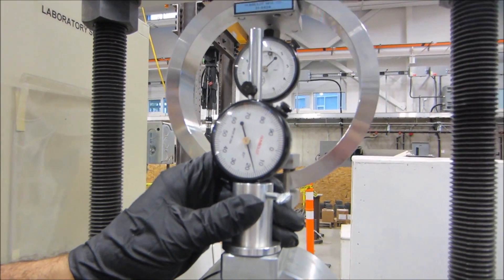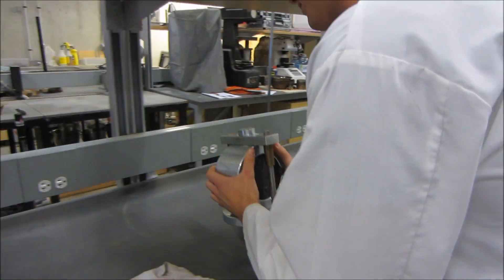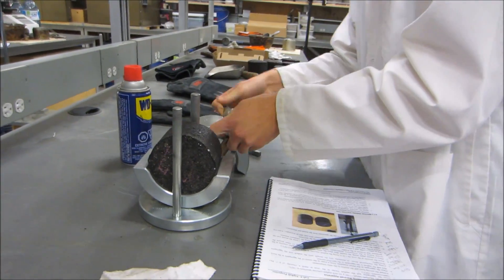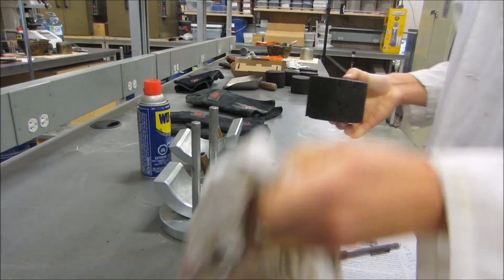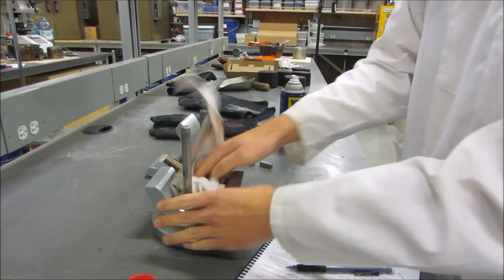Also take a reading for the flow gauge. Remove the breaking head from the Marshall stability machine and remove your specimen from the breaking head sections. Use WD-40 to clean the inside surfaces of the breaking head.